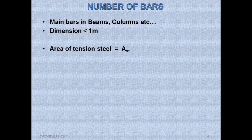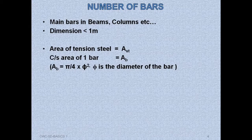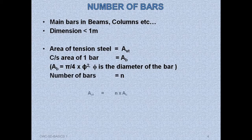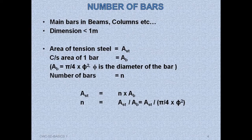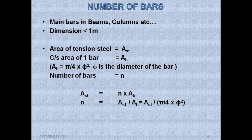Let Ast be the area of tension steel and Ab be the cross-sectional area of one bar. If Φ is the diameter of the bar, then Ab = (π/4)·Φ². Let n be the number of bars, so Ast = n × Ab, which gives n = Ast / Ab = Ast / [(π/4)·Φ²]. That is, n equals the total area of steel divided by the cross-sectional area of one bar.